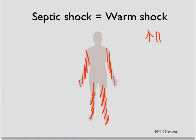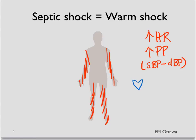They're often tachycardic, and their pulse pressure — the difference between their systolic blood pressure and diastolic blood pressure — can be high. Remember from part one, we talked about end organ dysfunction. So don't be surprised that the patient in septic shock may have changes in their cardiac output because of ischemia or arrhythmia. They might be confused or have decreased level of consciousness because of central nervous system involvement. On top of whatever infection they have, they may also have signs of ARDS or pulmonary edema in the lungs as well.